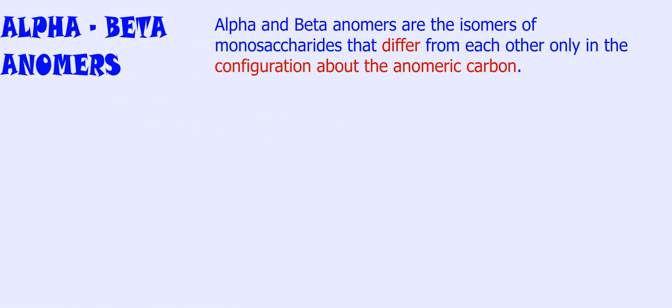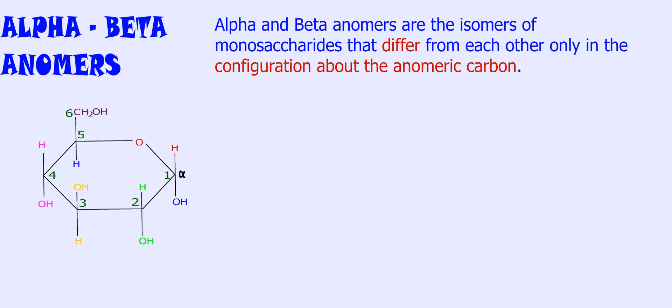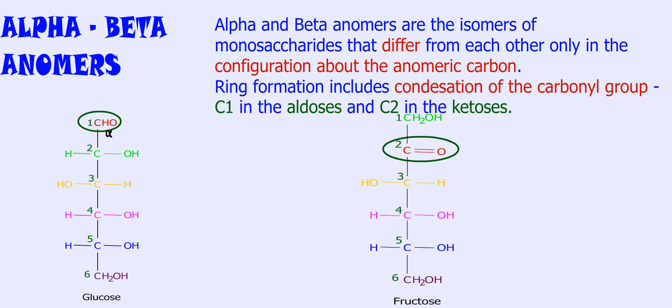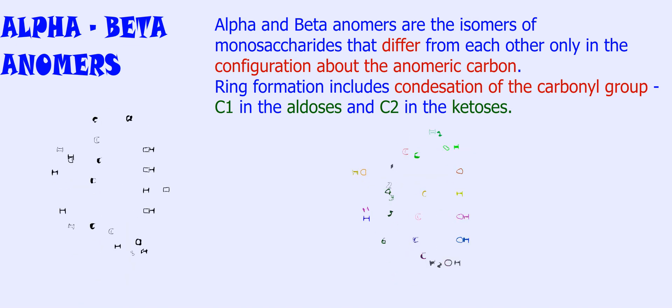Example: Glucose and Fructose. 4. Alpha and beta anomers. Alpha and beta anomers are isomers of monosaccharides that differ from each other only in the configuration about the anomeric carbon. Monosaccharides of five or more carbon atoms are present in ring forms. Ring formation includes condensation of the carbonyl group — C1 in aldoses and C2 in ketoses — with one of the alcohol groups of the same sugar, forming a closed ring structure.